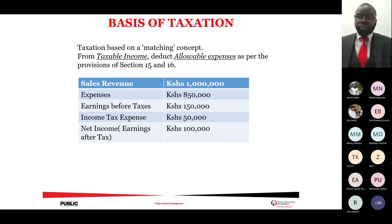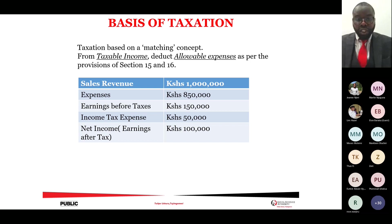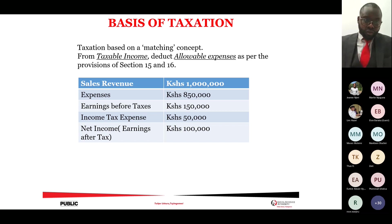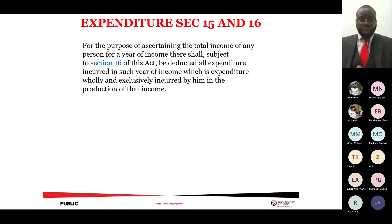If you deduct expenses that are not allowed within the law, those expenses may be disallowed by KRA during an audit or when we have information that your listed expenses are not allowable. From your gross turnover, you deduct allowable expenses and the income tax expense, and you arrive at net income — that is what we normally tax.